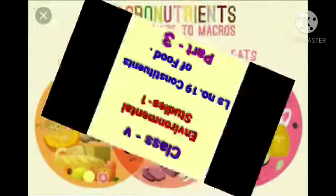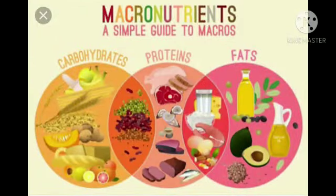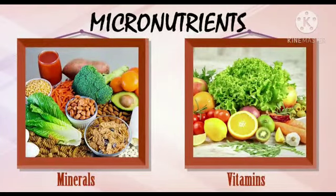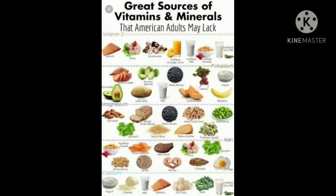So students, as you all know that we have learned about macronutrients and micronutrients. In short, I am going to tell you all about the sources of vitamins and minerals. So students, these sources of vitamins and minerals are all kinds of fruits, vegetables, sprouted pulses, skin of bran of cereals, etc. So these are the sources of vitamins as well as minerals.